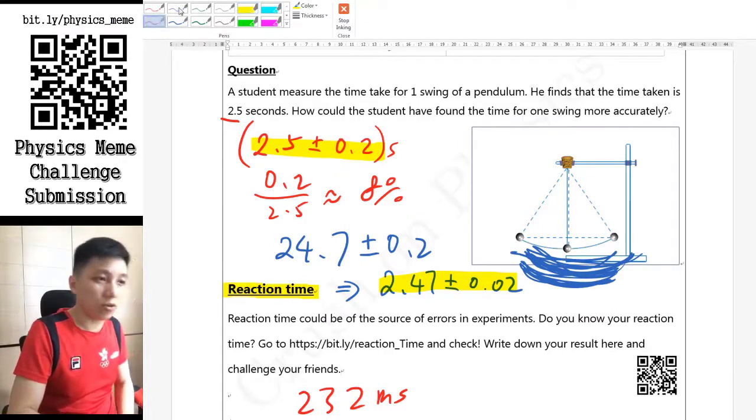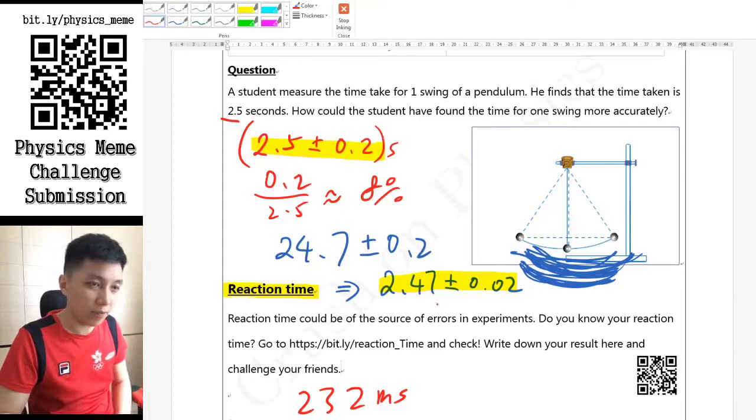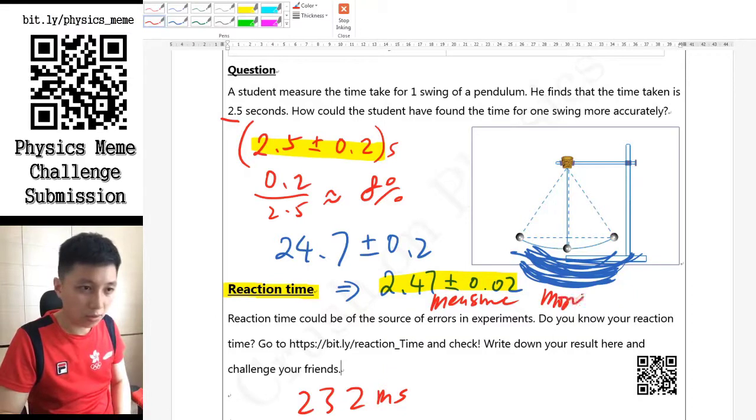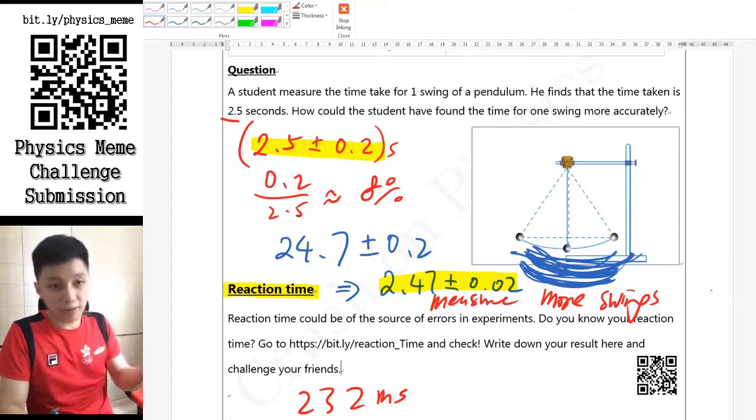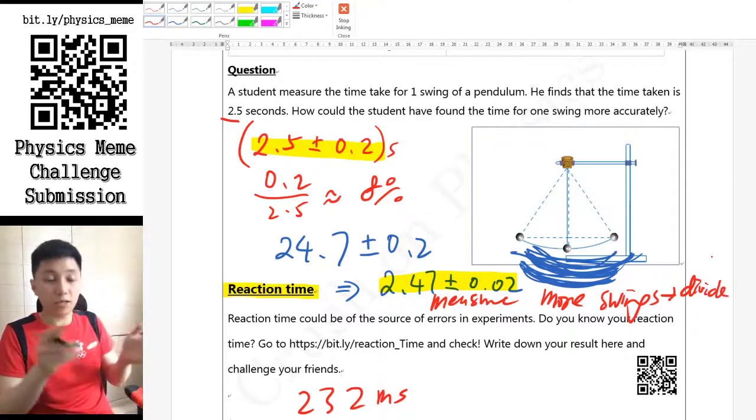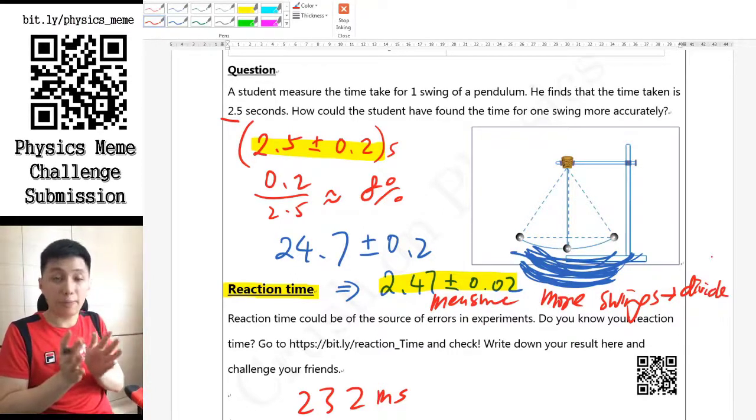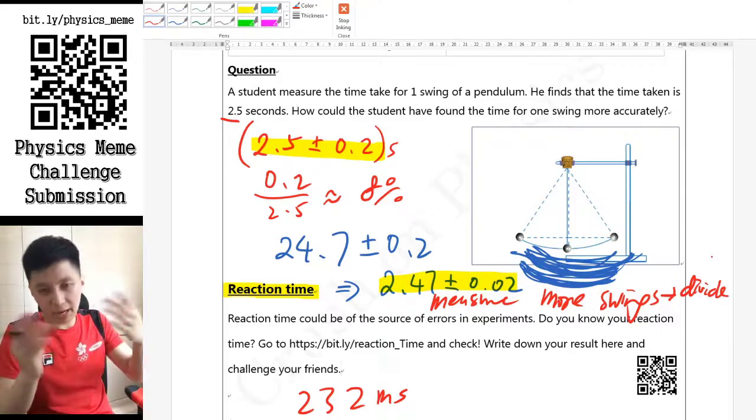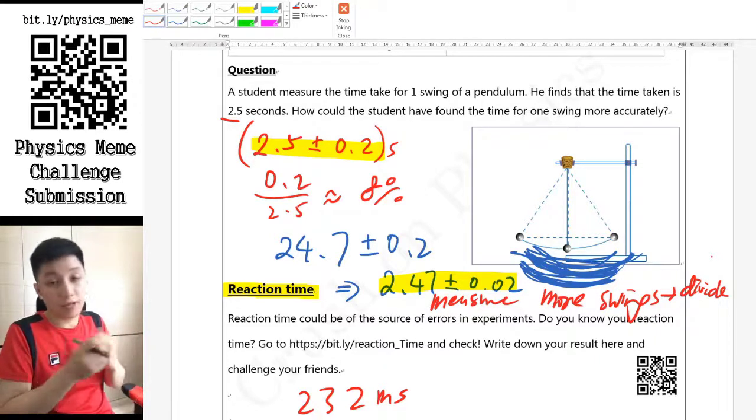This will be one way of making the measurement more accurate. What we can say about this is you can say measure multiple or more swings and then you can divide the number, just like how we do for measuring a stack of paper. Find a stack of paper, measure it and divide by maybe hundred pieces of paper, then you can measure and estimate how thick it is for one paper. Same idea here.